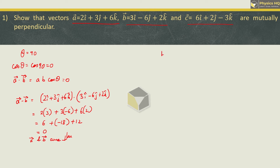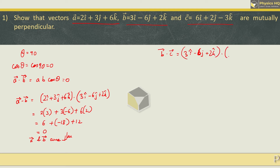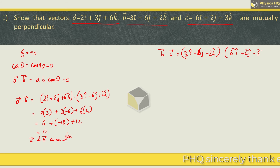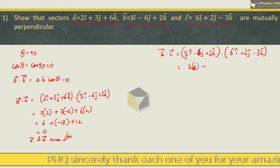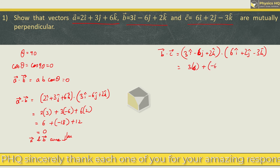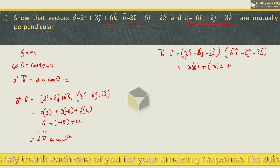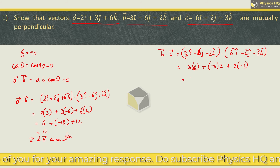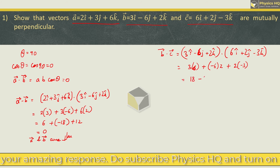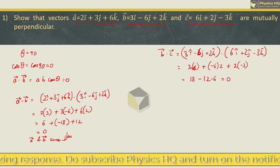Similarly we will try it for b and c as well. b is given as 3i minus 6j plus 2k, dot product with 6i plus 2j minus 3k. The i-components give 3 into 6, j-components are minus 6 and 2, and k-components are 2 and minus 3. So this is 18 minus 12 minus 6, which again equals 0.